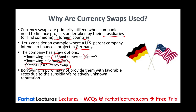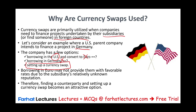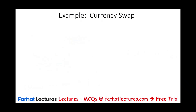Borrowing in Germany may not be favorable because you are relatively unknown to the German bank. Therefore, even if you qualify for a loan, you may be imposed a higher rate. So what you would do is find a counterparty — another company in Germany that wants to invest in the US — and do a currency swap.